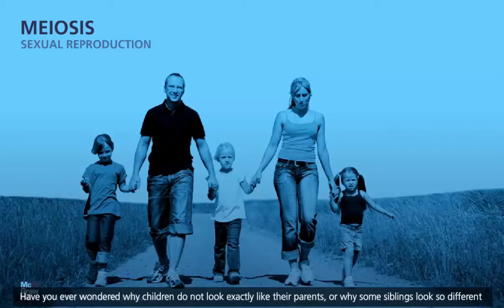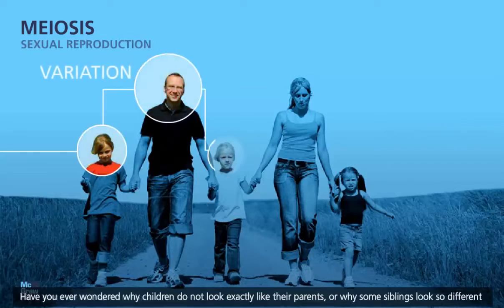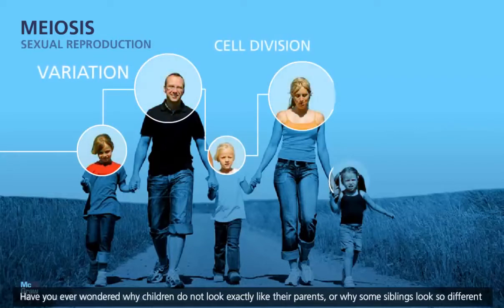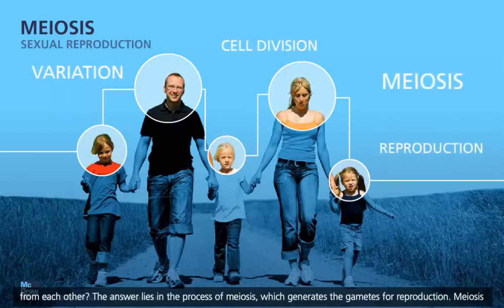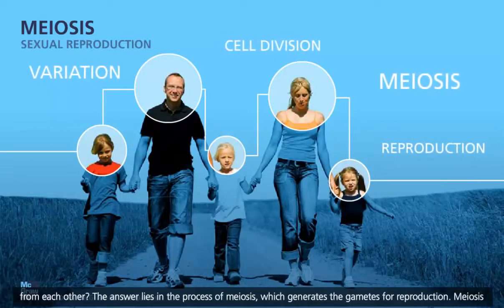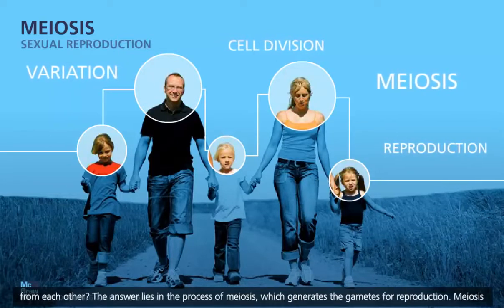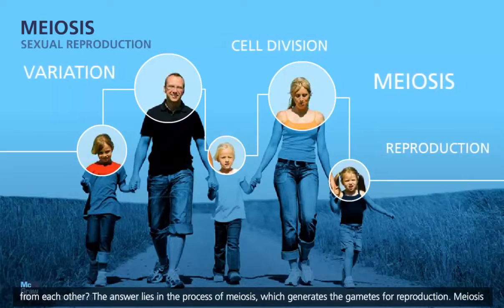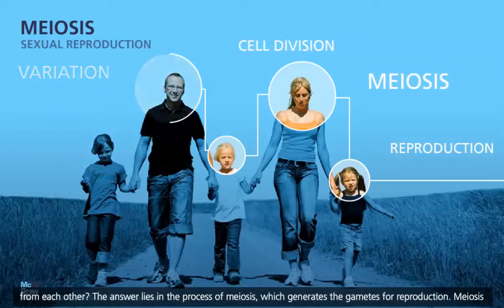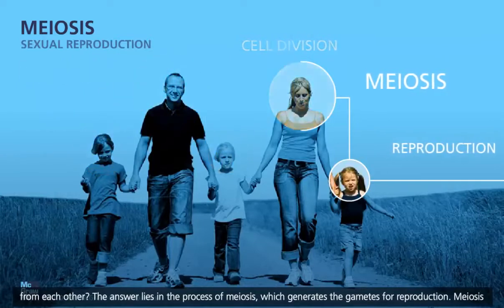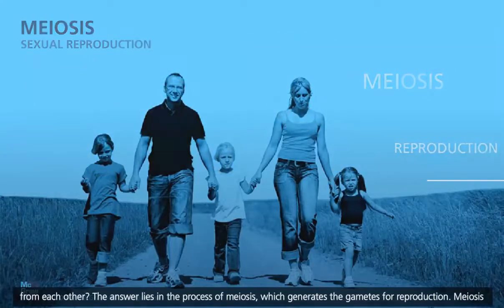Have you ever wondered why children do not look exactly like their parents, or why some siblings look so different from each other? The answer lies in the process of meiosis, which generates the gametes for reproduction.